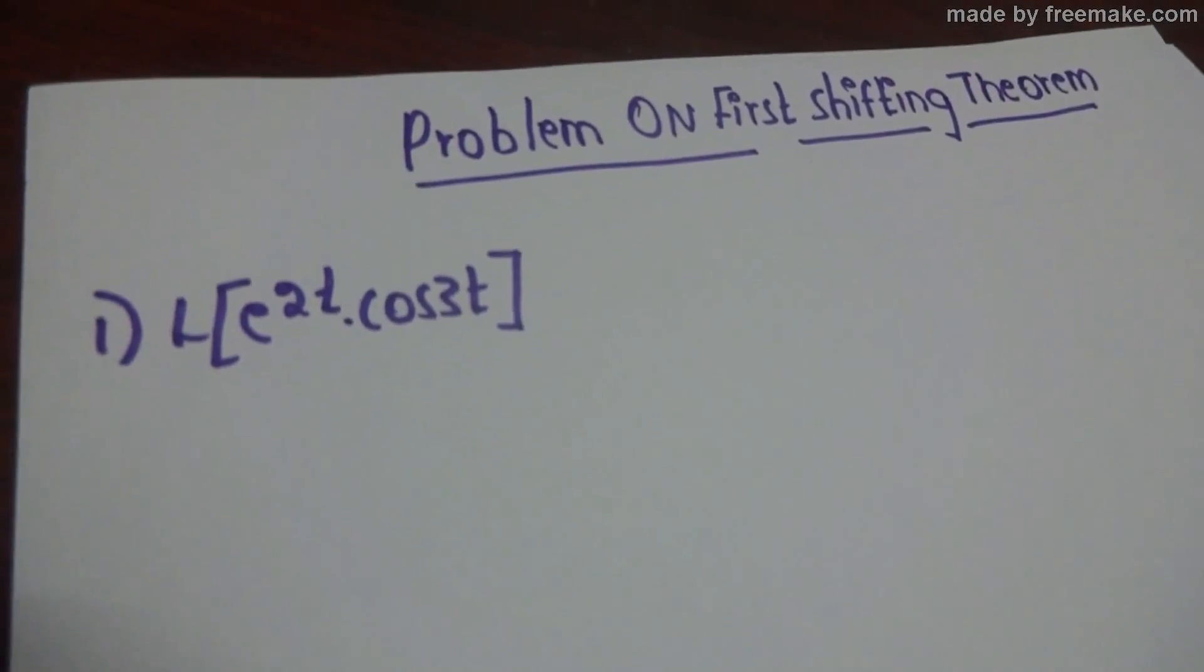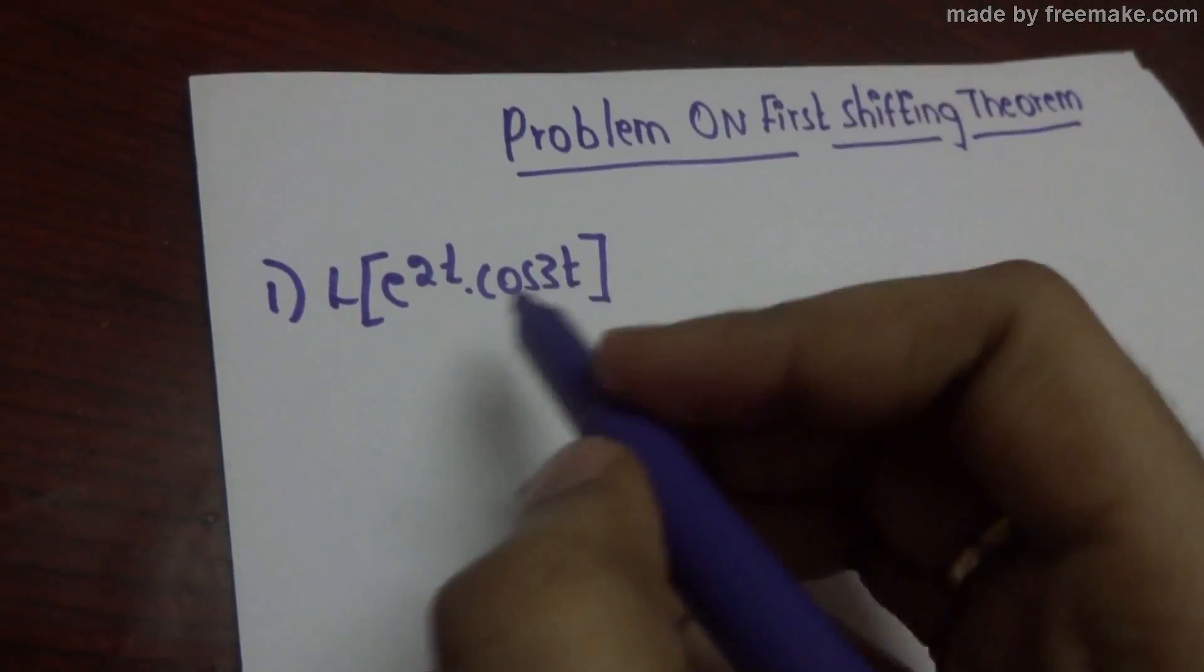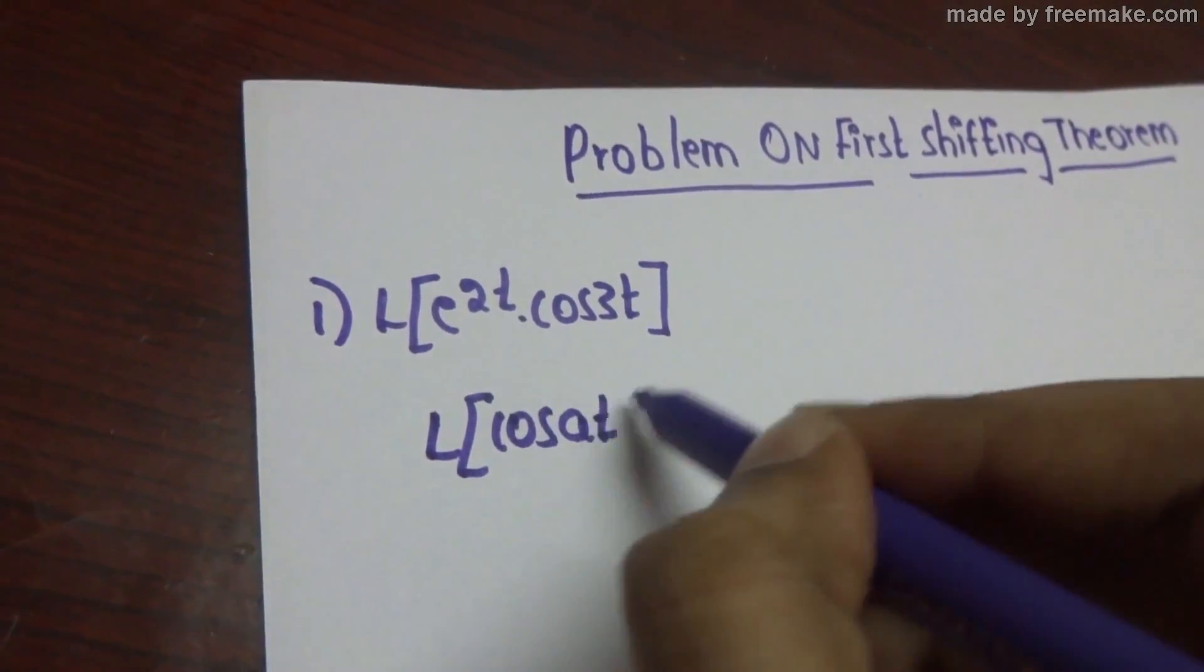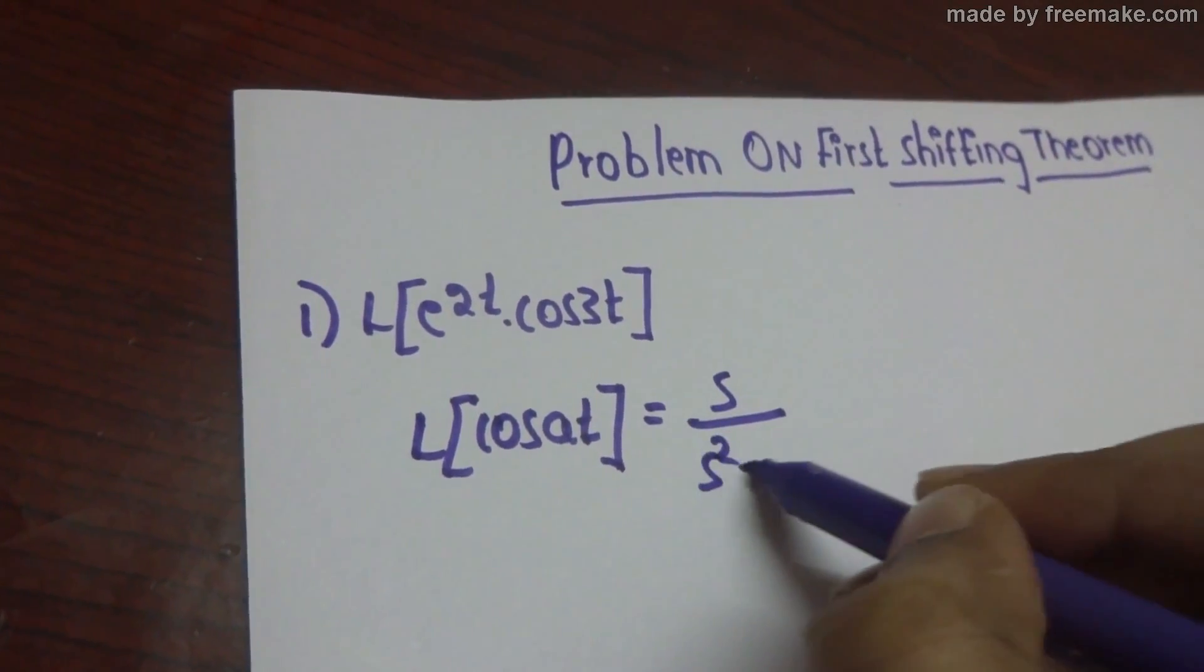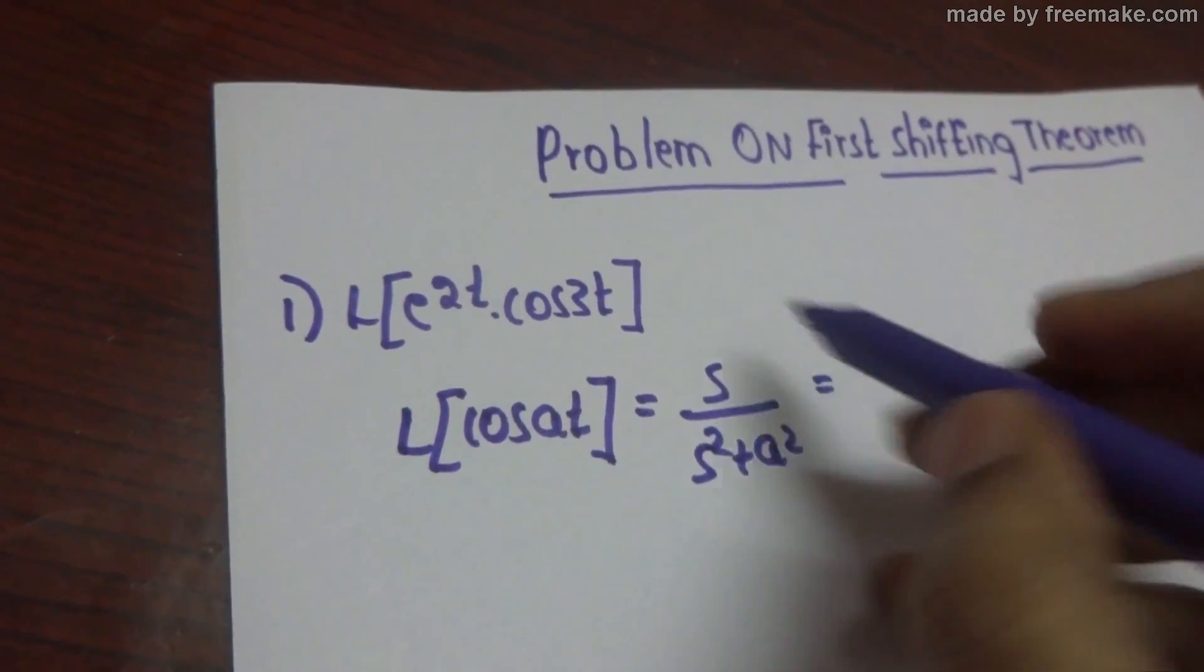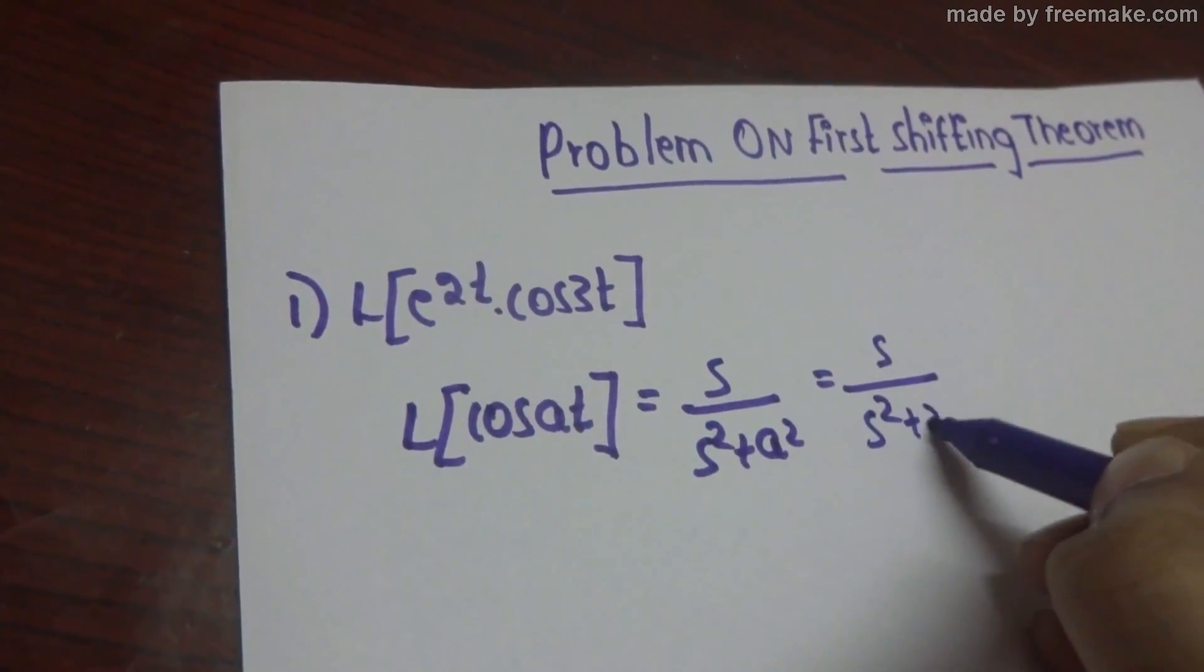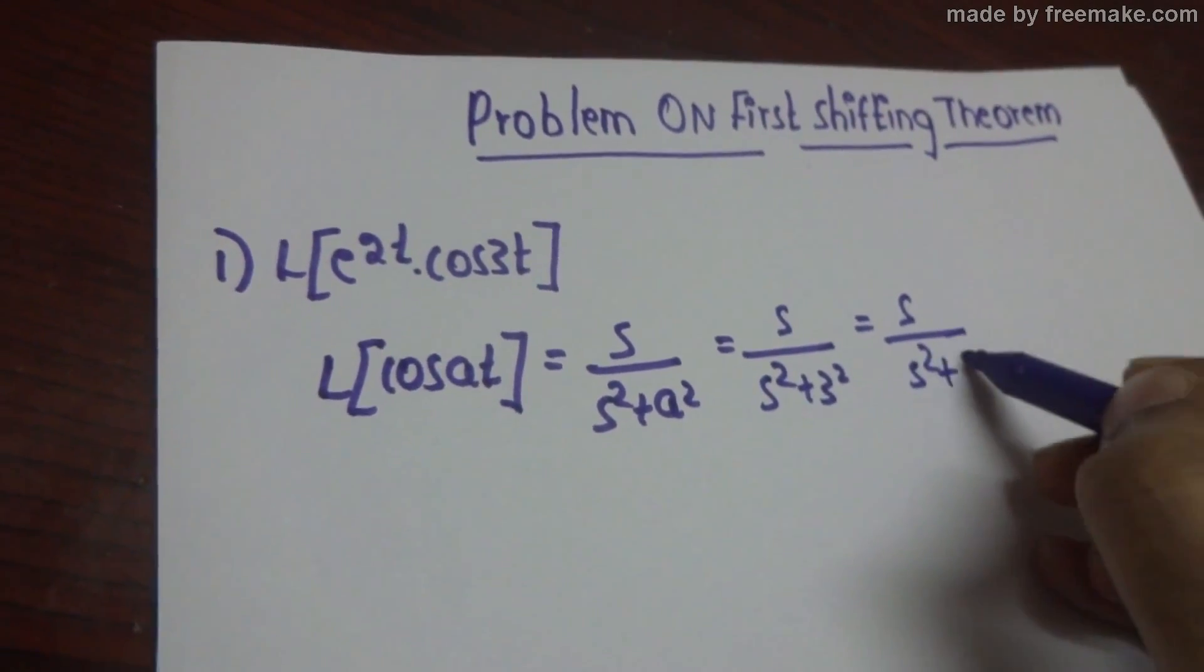There is a problem on first shifting theorem. Laplace of cos(at) is s/(s^2 + a^2). Here cos(3t) and a is 3, so s/(s^2 + 3^2). It is equal to s/(s^2 + 9).